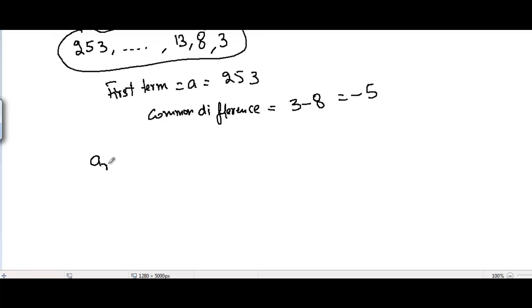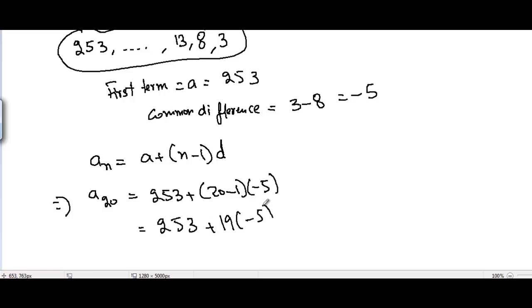Now we can use the formula to find the nth term, and the formula is an = a + (n - 1) × d. Because we need to find the 20th term, n is equal to 20 here. So a is known to us and it's 253, and n is 20 minus 1 times d, where d is minus 5. So we get here 253 plus 19 times minus 5.